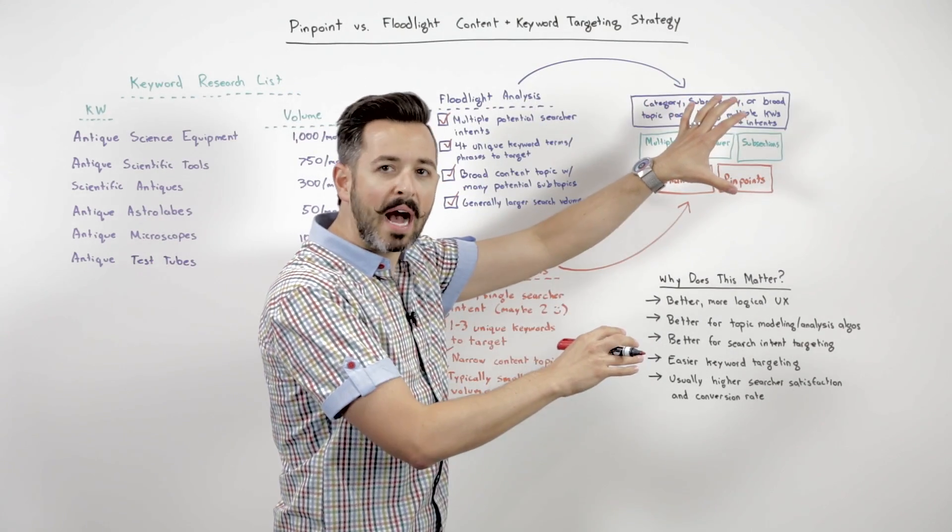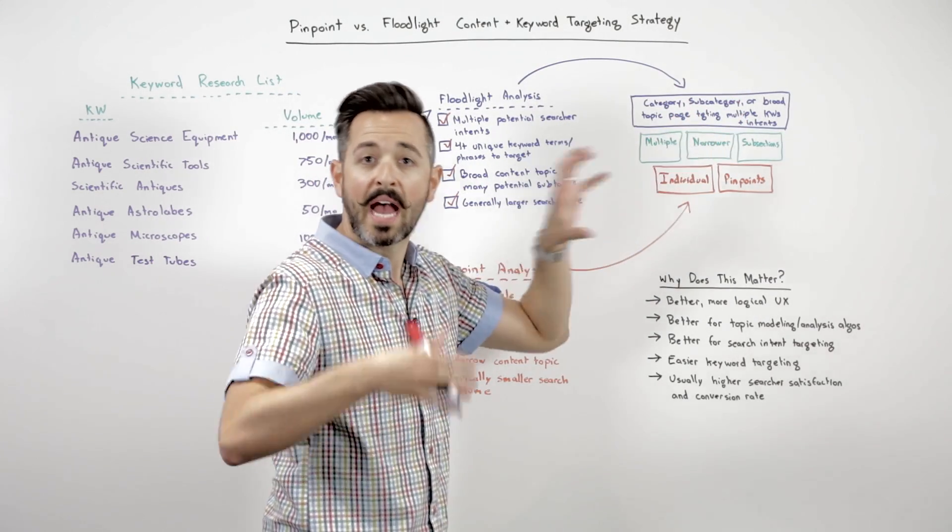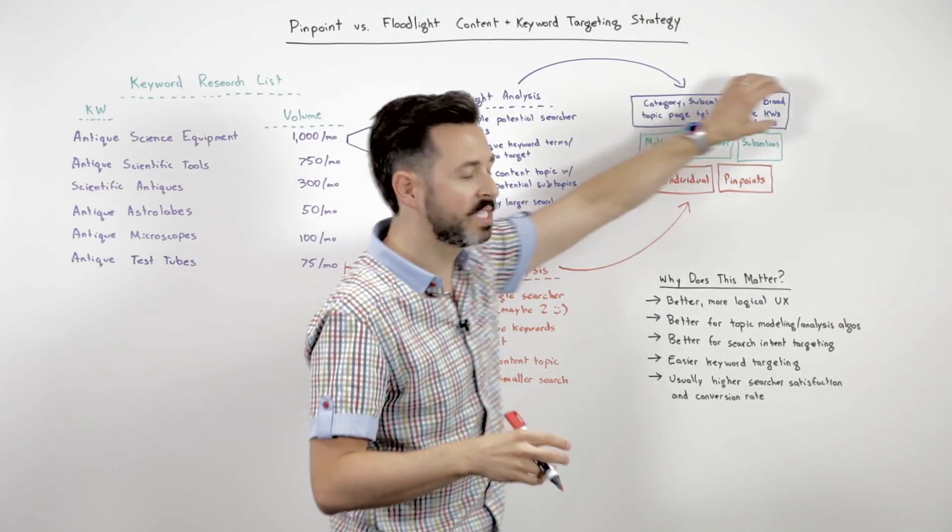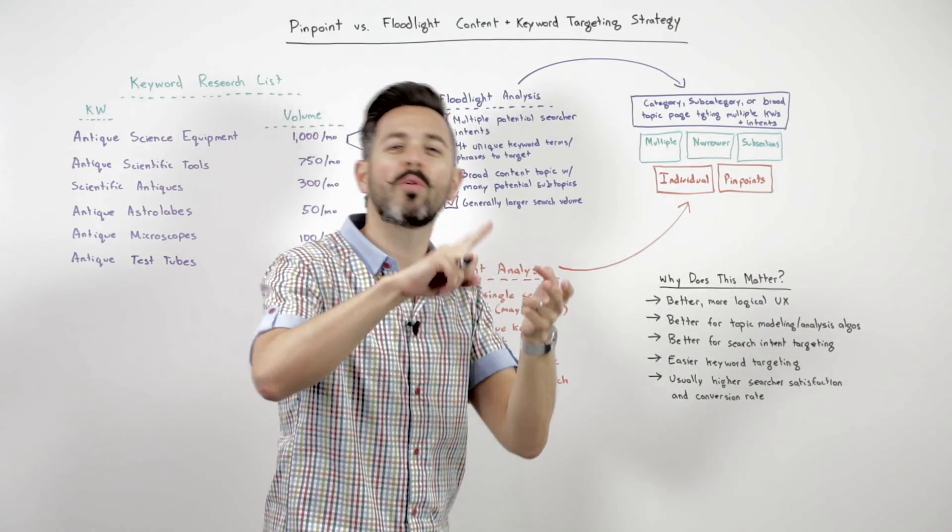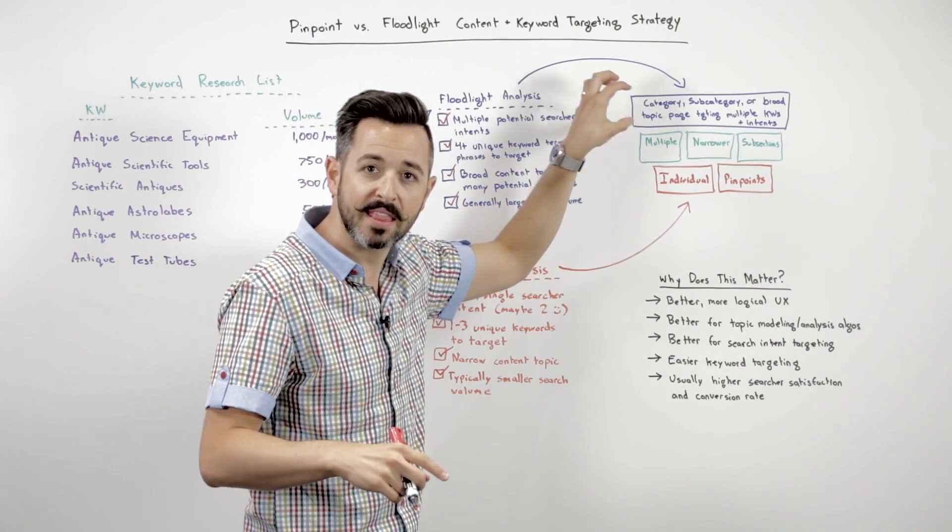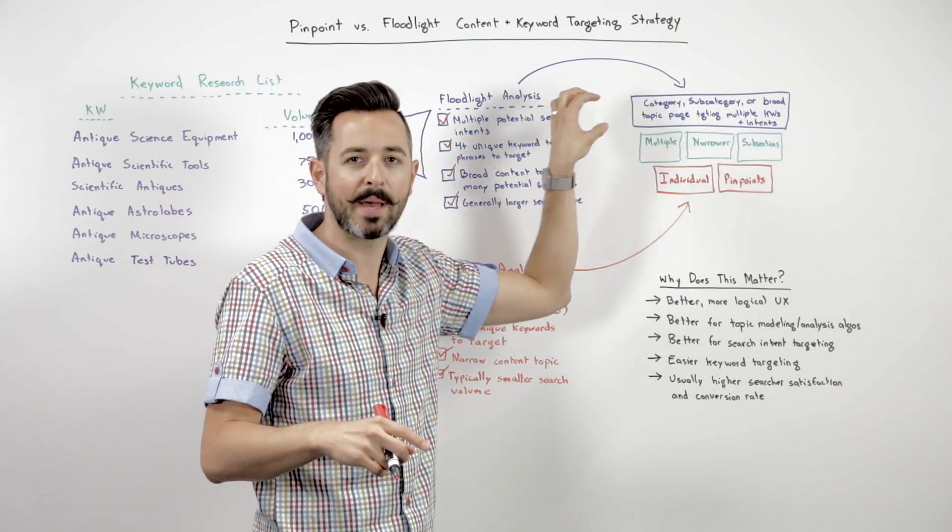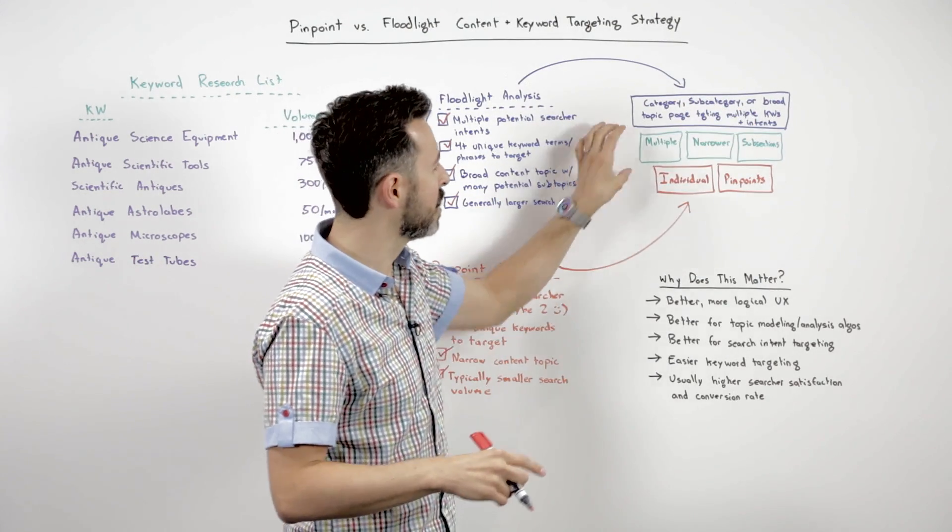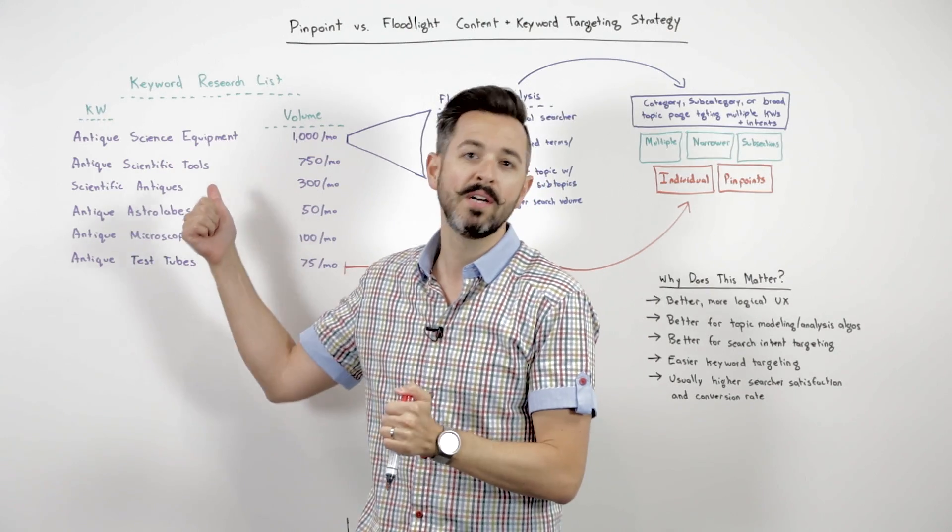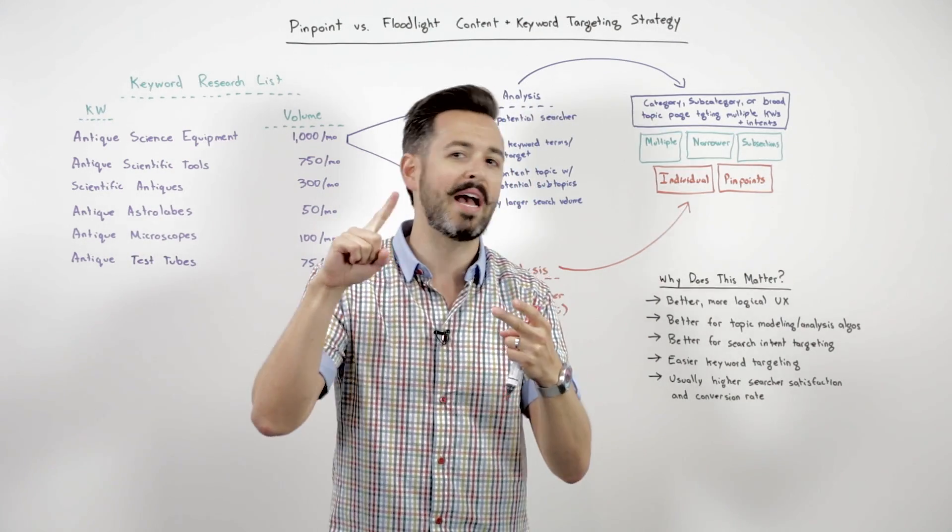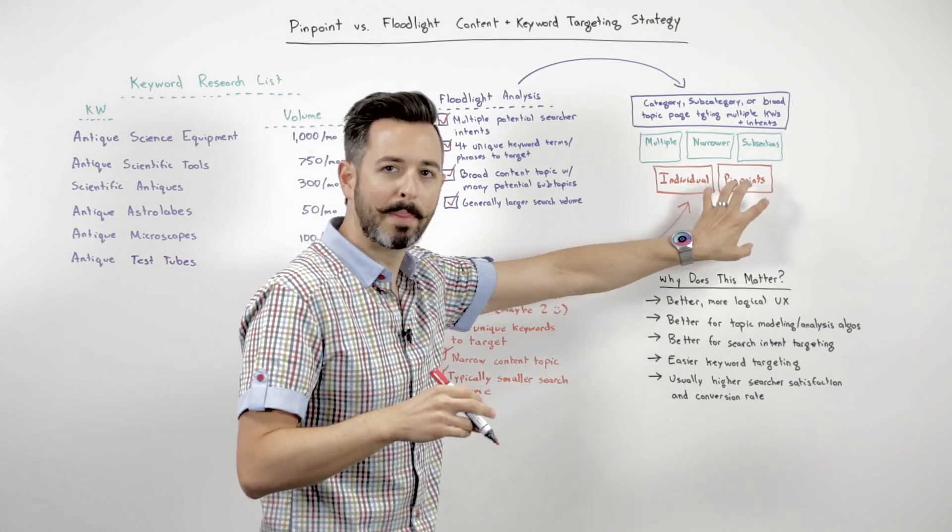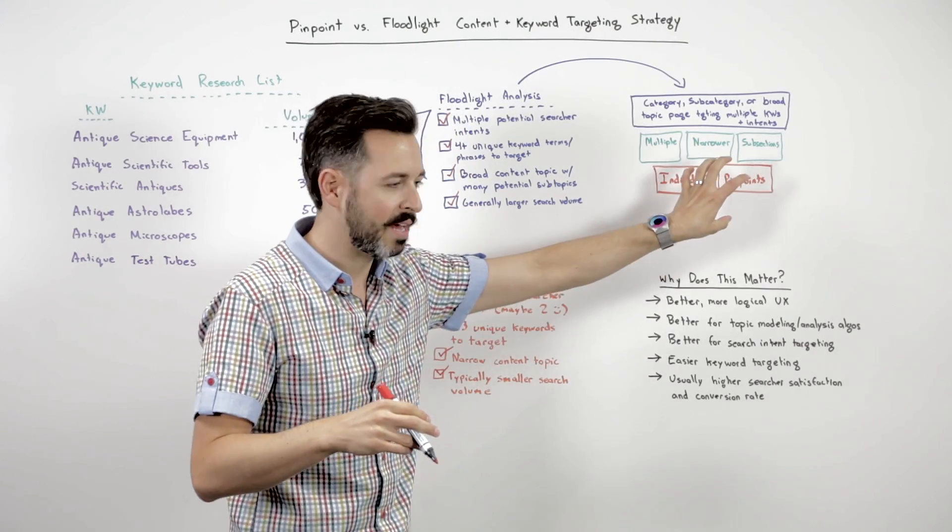Now these are going to feed into your IA, your information architecture, and your site structure. Floodlight content generally sits higher up. It's the category or the subcategory, those broad topic terms and phrases, and those are going to turn into those broad topic category pages. Then you might have multiple narrower subtopics. So we could go into lab equipment versus astronomical equipment versus chemistry equipment. And then we'd get into those individual pinpoints from the pinpoint analysis.